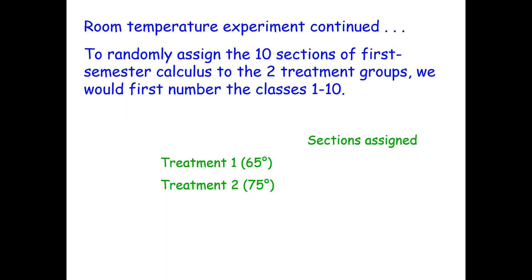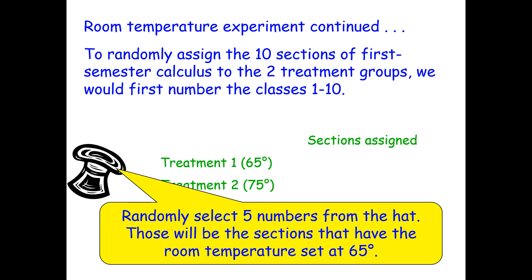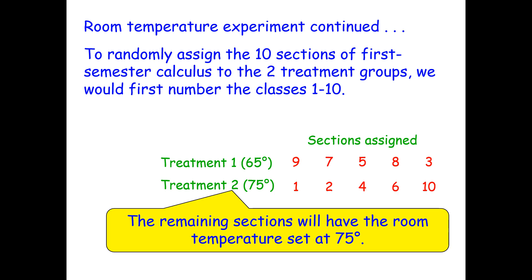To randomly assign the ten sections of first semester calculus to the two treatment groups, we first number the classes 1 through 10. Then place all the numbers on identical slips of paper, put them in a hat, and mix it up. We randomly select five numbers from the hat — these will be the sections with room temperature set at 65 degrees. We draw sections 9, 7, 5, 8, and 3. The remaining sections — 1, 2, 4, 6, and 10 — will have room temperature set to 75 degrees.